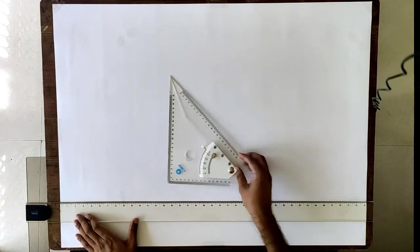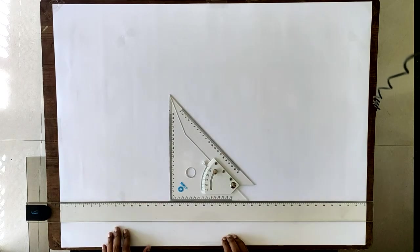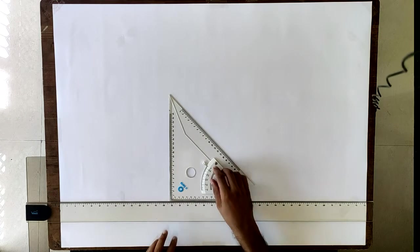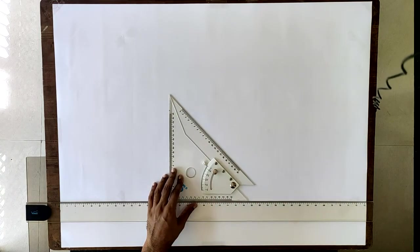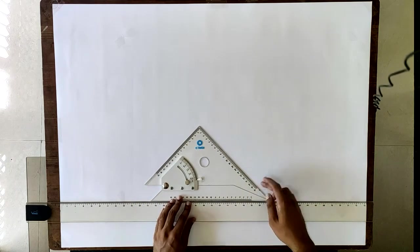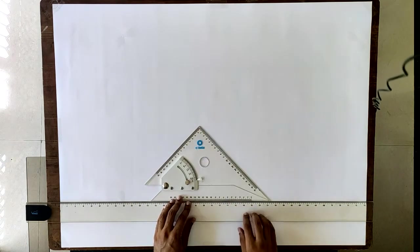It is used along with your T-scale to draw angles. In this case you can draw a perpendicular or a 45 degree line like this. Place it this way, you can draw a 45 degree line here and a 45 degree line there.